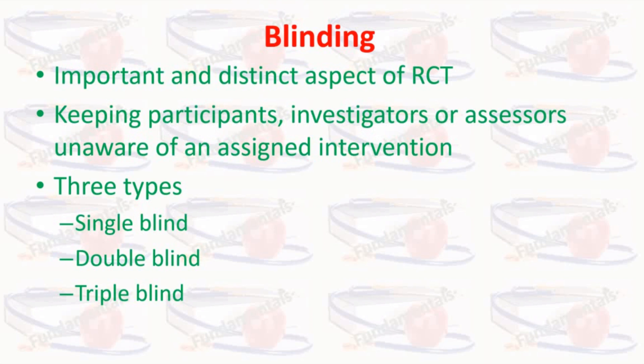So, the four types of persons involved in randomized controlled trials are: patients, doctor, statistician, and the researcher. In Single Blind RCTs, participants do not know whether they are getting the new drug or not. In Double Blind RCTs, both doctor and participants are unaware of the assigned drug. In Triple Blind RCTs, participants, doctor, and statistician — all three — are unaware of the assigned drug. Only the investigator knows the group allocation and treatment allocation.